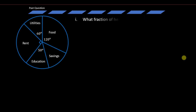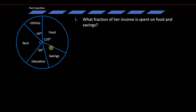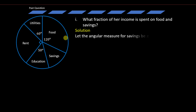The first question asks what fraction of her income is spent on food and savings. Before we answer that, notice that the angle for savings has not been given. Our first job is to find the angle for savings. Remember, all these angles are angles at a point, and angles at a point sum up to 360 degrees. So let the angular measure for savings be x.